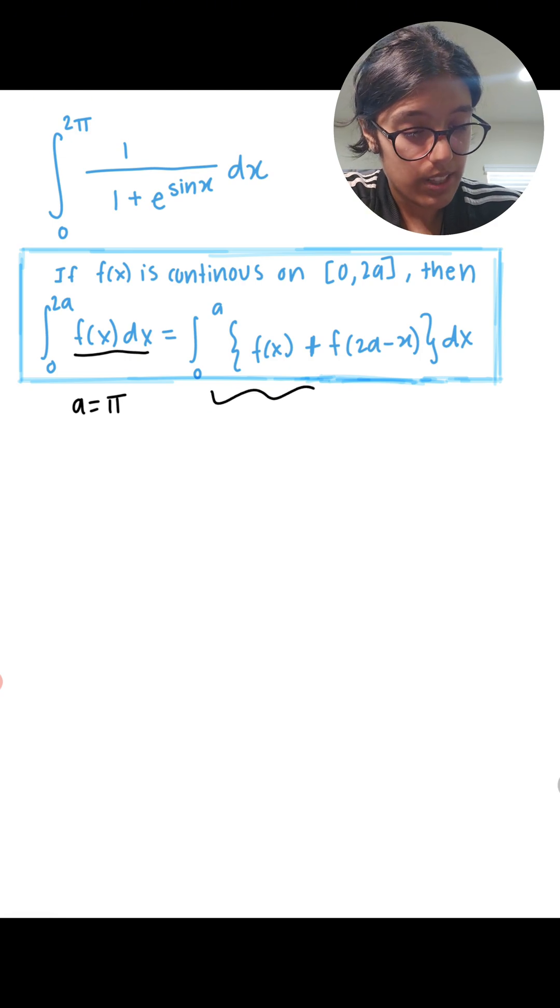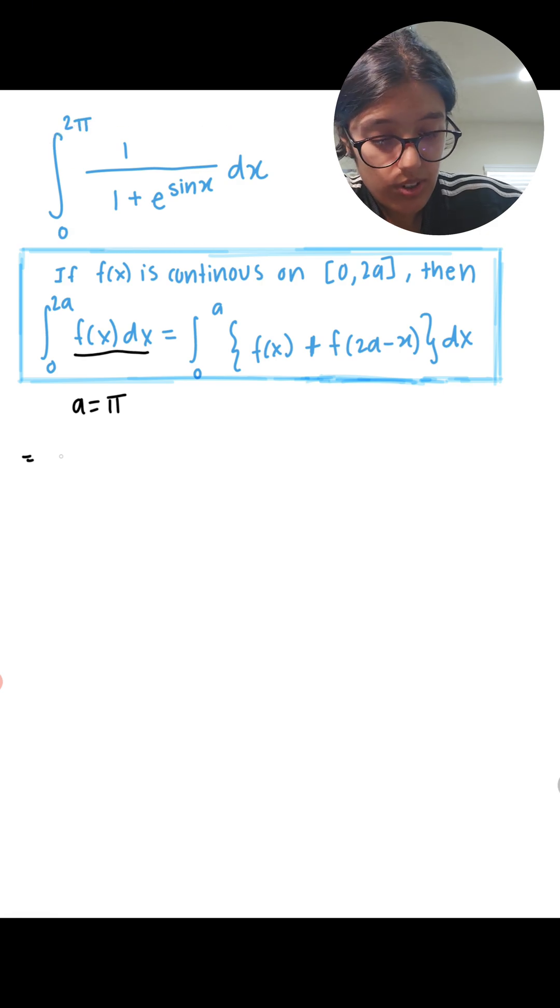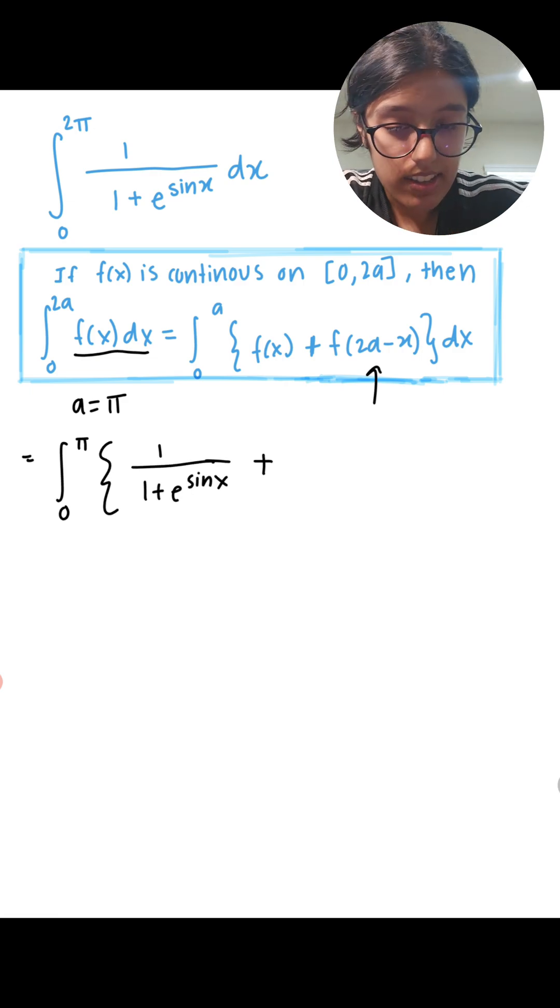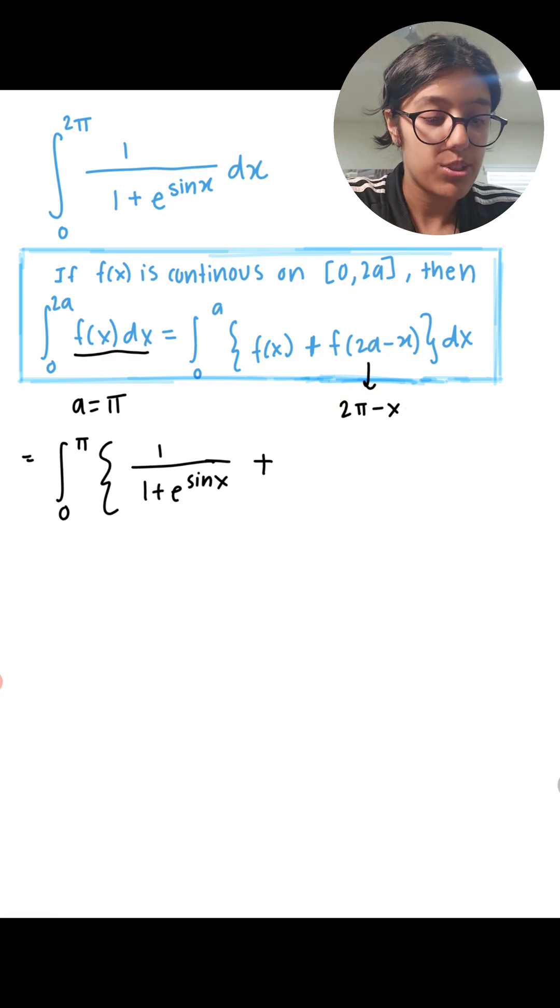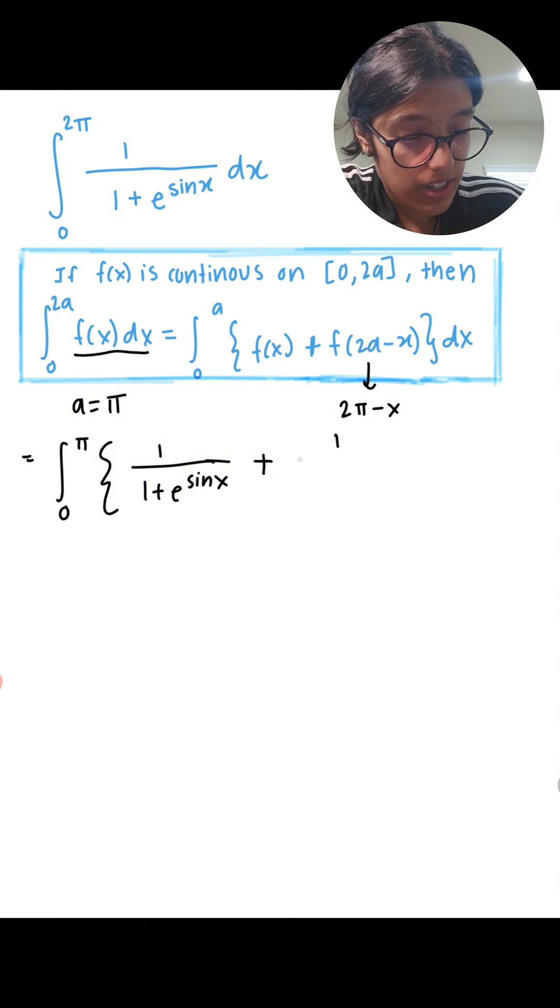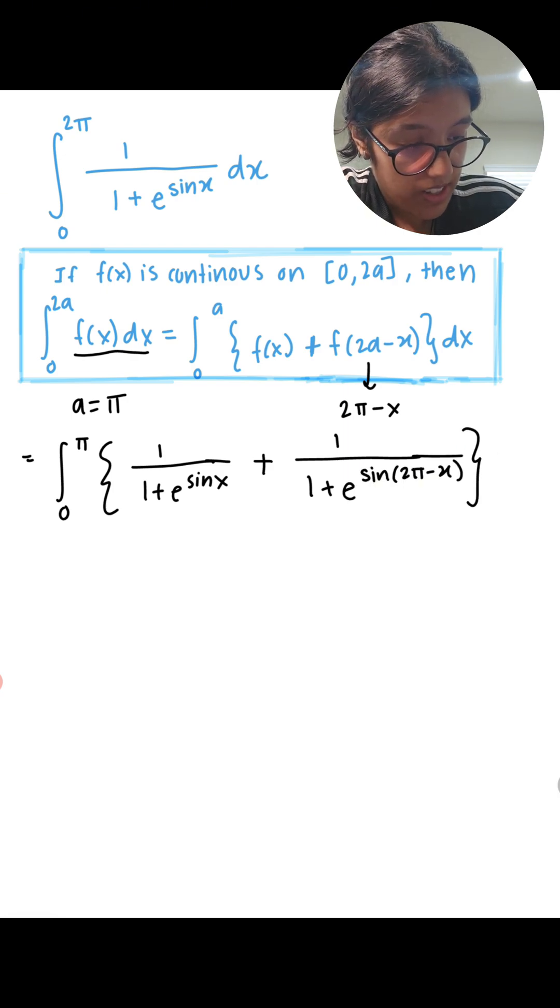We're actually just going to put everything we know on the right side of the equation. So our original integral is equal to integration of 0 to a over here, that's a, so 0 to π of f of x. f of x is this expression over here from our question plus f of 2a minus x and this is actually going to be 2π minus x because we said a was π, so f of 2π minus x. So I'm going to rewrite it as 1 over 1 plus e to the power of sine of 2π minus x dx.